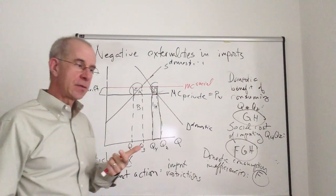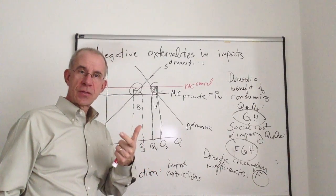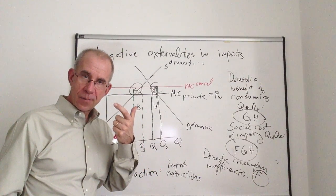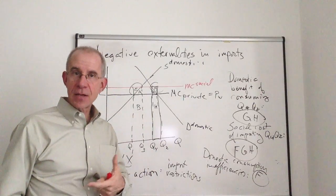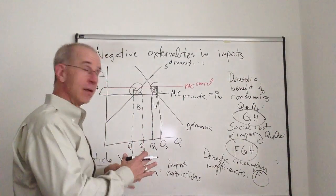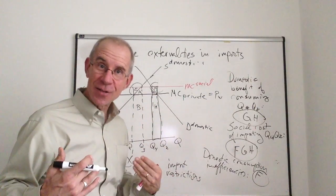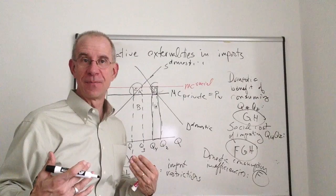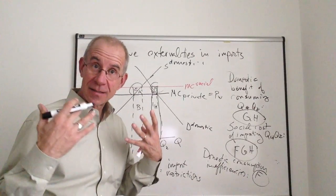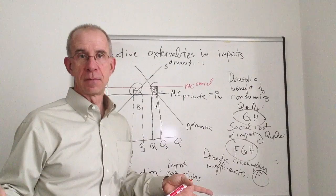So for example, if you take cigarettes, whether cigarettes are produced domestically or internationally, they cause health problems. So you wouldn't be able to raise restrictions just on imported cigarettes, because it's not the importation of the cigarettes that causes the problem, it's the consumption of cigarettes from wherever they arrive.